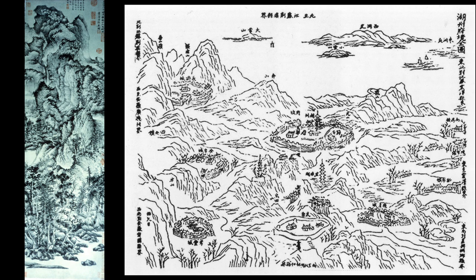In 1366, when Wang Meng did his painting, this region was being devastated by warfare — ongoing battles between two contenders for succession to the weakened Yuan or Mongol regime. A decisive victory was won by Zhu Yuanzhang in December of 1366 in a battle fought near Wuxing. So the region that Wang Meng's painting represents was very much in a state of turmoil, its inhabitants in jeopardy, no longer the safe haven that it represented for the family.